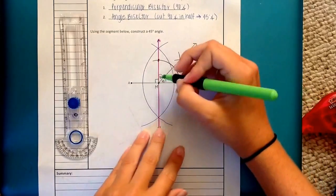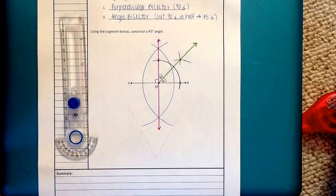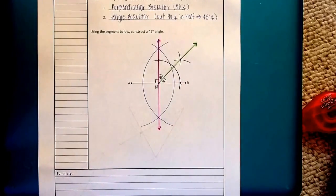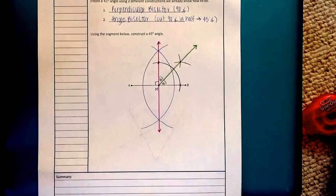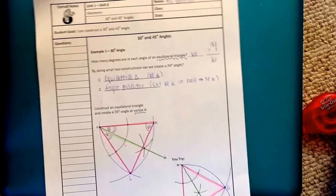And again, I'm just going to outline my angle bisector in a different color. Alright, there we go. 30 degree angles and 45 degree angles using a known construction and an angle bisector. See ya!